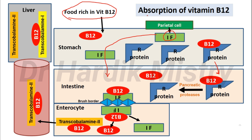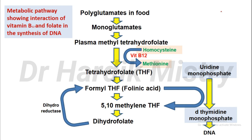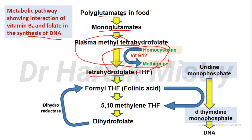This completes the absorption of vitamin B12. Now, regarding the metabolic pathway showing the interaction of vitamin B12 and folate in the synthesis of DNA: polyglutamates from food are converted to monoglutamates, which are then converted to plasma methyl tetrahydrofolate. In the presence of vitamin B12, homocysteine is converted to methionine, and during this event plasma methyl tetrahydrofolate is also converted to tetrahydrofolate. This step requires vitamin B12 and cannot occur without it.